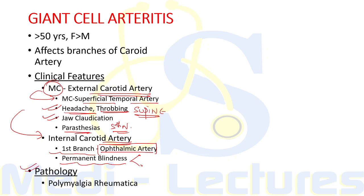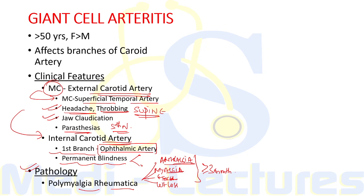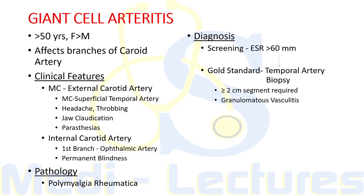If the ophthalmic artery is involved, it can lead to permanent blindness because it is an end artery without collaterals. The pathology is typically explained by a symptom complex known as Polymyalgia Rheumatica, seen with Giant Cell Arteritis, which typically has arthralgia, myalgia, fever, and weight loss for more than or equal to three months duration. For screening, ESR is done.